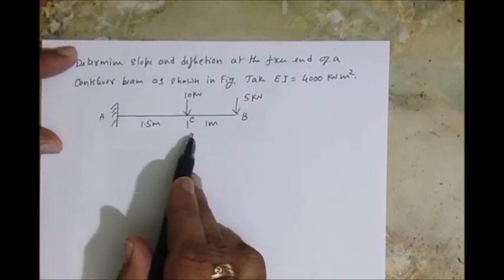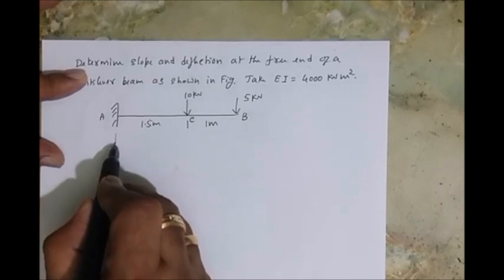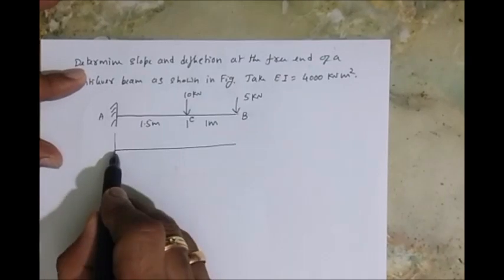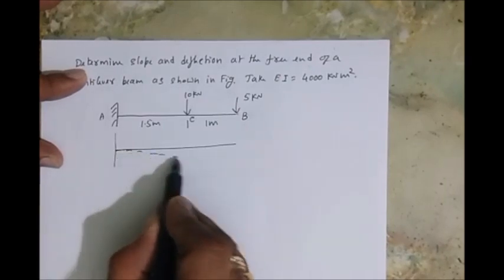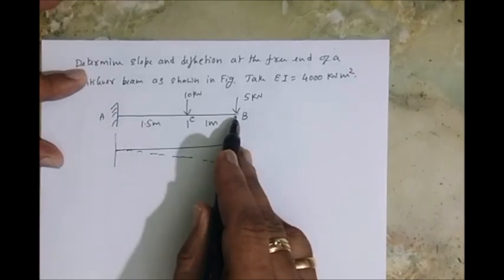As we discussed in the previous section, let's first draw the elastic curve for our better understanding. So there is no change in the elastic curve; it will remain the same. And now I'm on the deflection, slope and deflection at the point B, that's the free end.